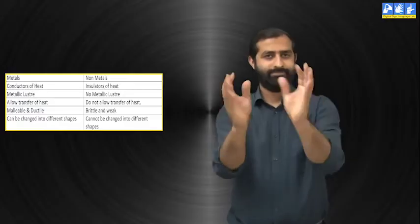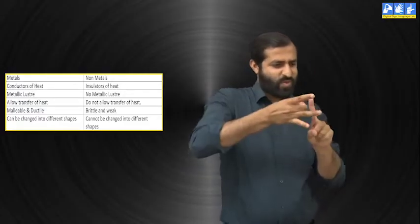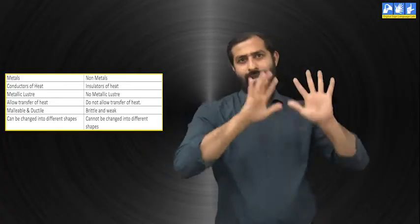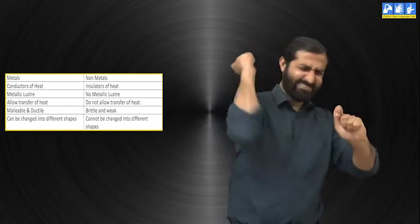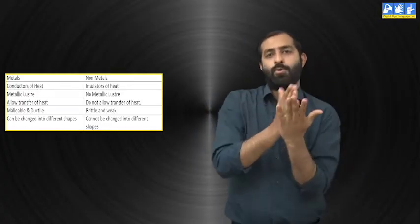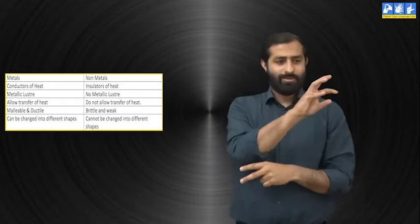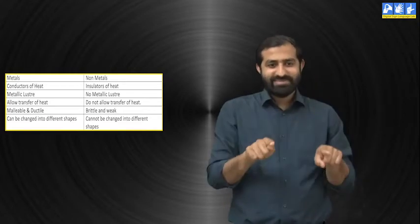First point, metals. Metals are malleable and ductile. It can be changed into various forms and shapes. For example, gold coins, gold biscuits etc.